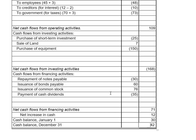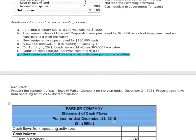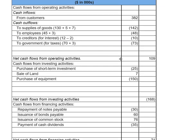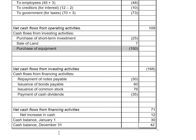One important note: if we had any non-cash events — for example, if notes payable and building both went up by $150 because we purchased equipment by signing a note — we would not include that in the body of the statement. Instead, below the line we'd add a 'Summary of Significant Non-Cash Events' section, stating we purchased a building by signing a note for $150,000.